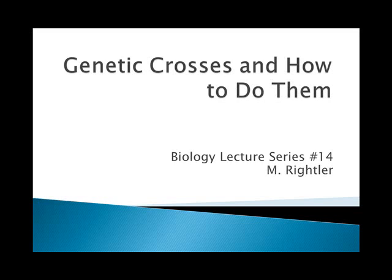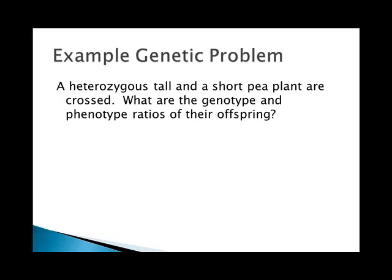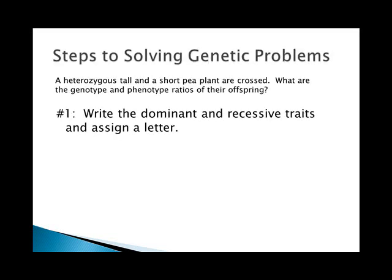Let's start off with an example: a heterozygous tall and a short pea plant are crossed. What are the genotype and phenotype ratios of their offspring? There are several steps to solving genetic problems. The first one is to write the dominant and recessive traits and assign them a letter.